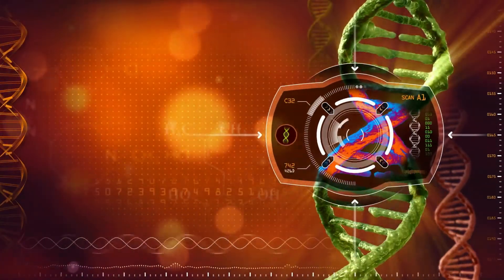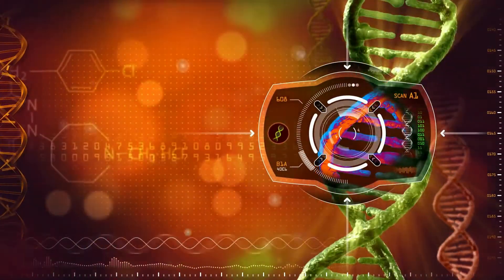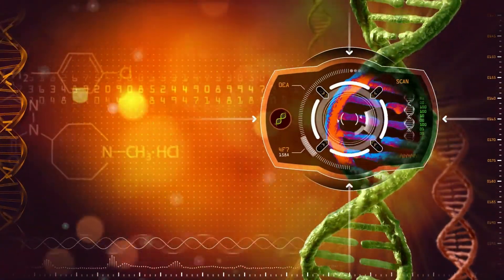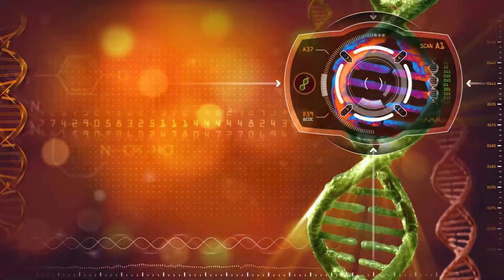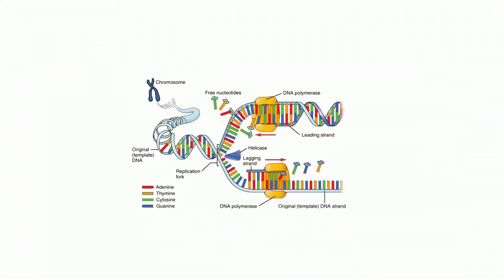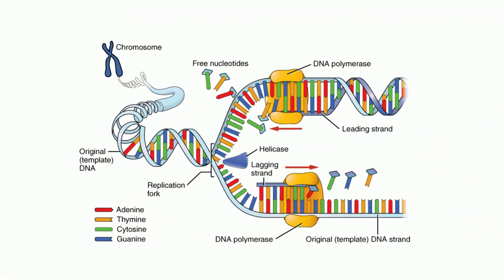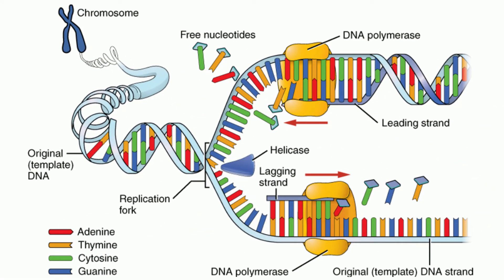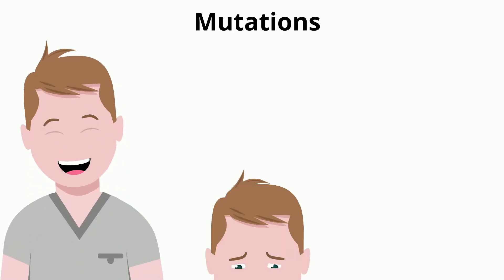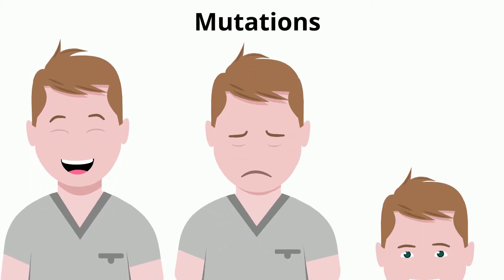This molecule of deoxyribonucleic acid, or DNA, is the blueprint of life. DNA has the ability to duplicate itself very accurately. However, sometimes mistakes do happen. These mistakes are called mutations, and they may be helpful, harmful, or even neutral.